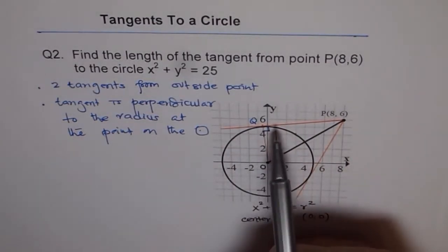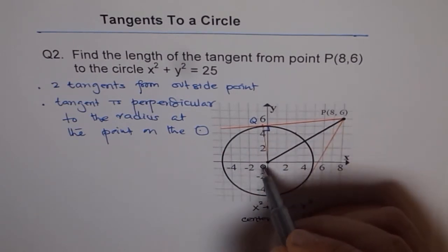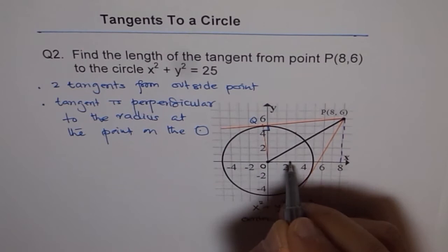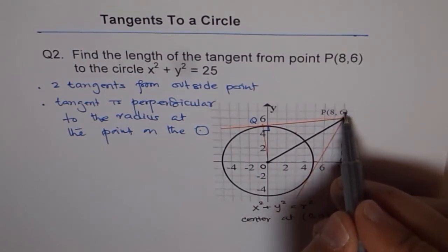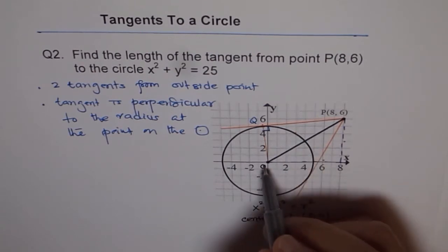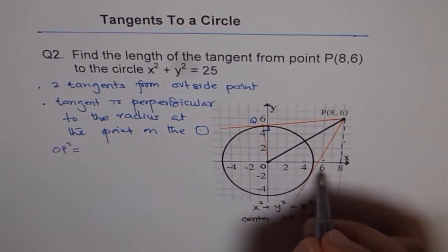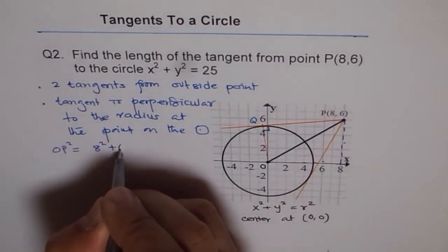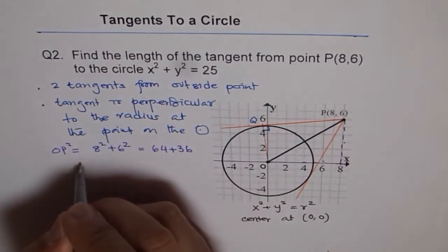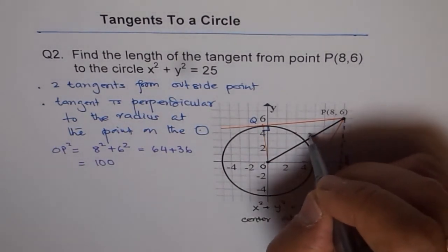To find the length of the tangent from point P to Q, we need to find what OP is. To find OP, we can draw a perpendicular here and consider this triangle. 8 and 6 are the coordinates of point P, meaning X distance is 8 and Y is 6. Square of 8 and square of 6 will give us OP, the hypotenuse. So OP² = 8² + 6², which is 64 + 36 and that equals 100. So OP² is 100, therefore OP will be √100, which is 10.